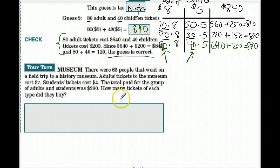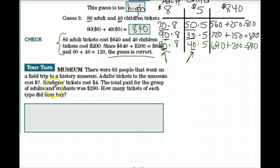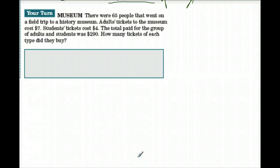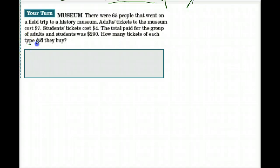Now it's your turn. Museum problem: there were 65 people that went on a field trip to a history museum. Adult tickets cost $7, children's tickets cost $4, and the total paid for the group was $290. How many tickets of each type did they buy? Set this up exactly the same way — give me a chart, give me a few guesses, and find how many of each type were sold. Pause and try it on your own, then check your answer.